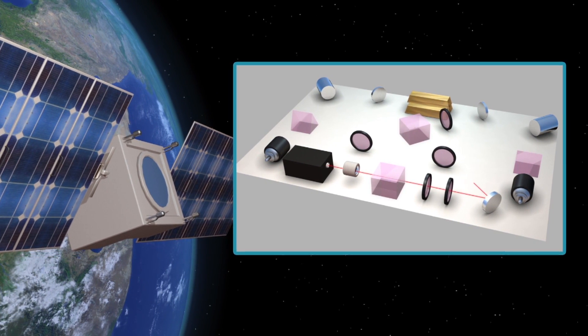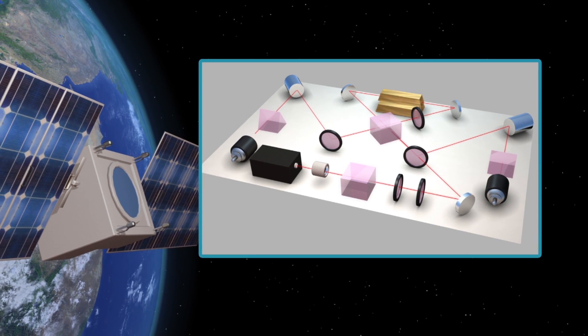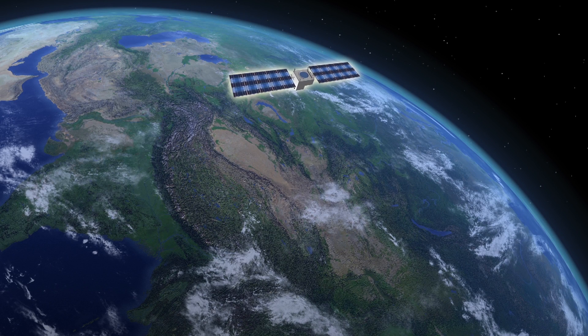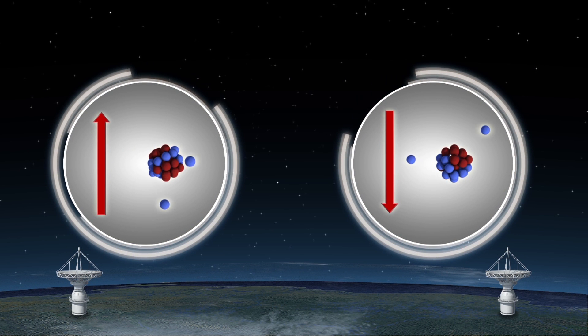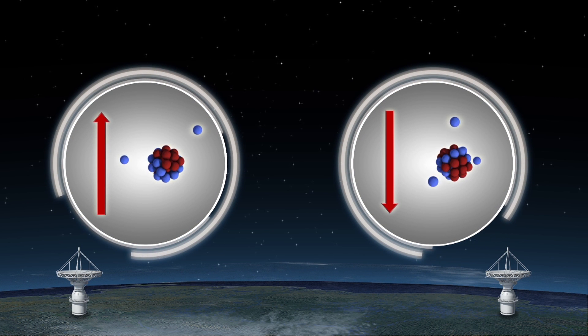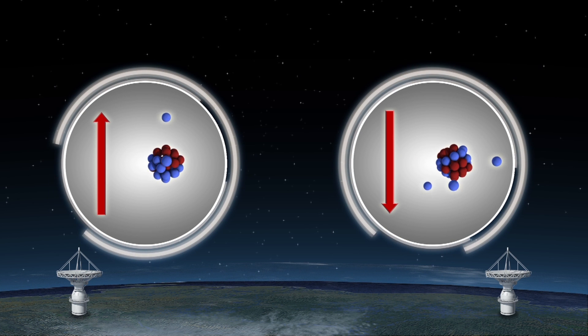The team produced entangled photons by sending a laser beam through a light-altering crystal on board the satellite. The photons were sent to two receiving stations in Delingha and Lijiang, 1,200 kilometers apart. Opposite polarization states were measured at the two stations, confirming the entanglement, otherwise known as spooky action, was achieved over a record distance.